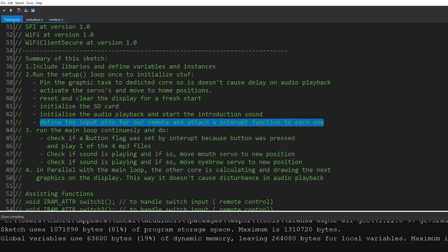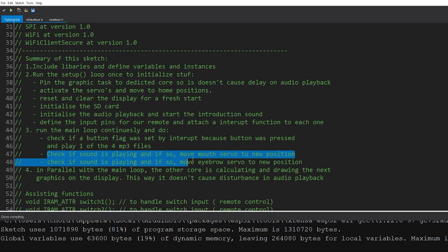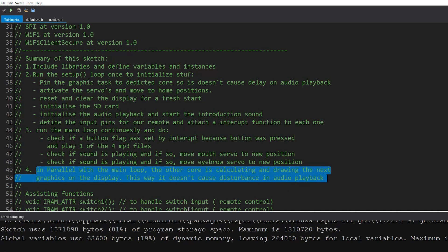After that, the main loop will run continuously. And it does several things. It will check for a button flag. Which basically means I'm checking if a button was pressed on the remote that needs handling. And if so, then I will handle it and play the appropriate sound file that goes with that. Also, while running through the main loop, I'm always checking if a sound is being played. If so, the mouth has to start moving. And the same goes for the unibrow. And parallel with that, there's a second core that we're using only to handle all the graphics. So every time we need to calculate and refresh the display, that's done on the other core. That way, it doesn't interfere with playback of audio. And the other way around, the playback of audio doesn't interfere with smooth movement of the eye that you see on the display.